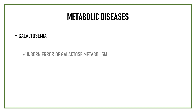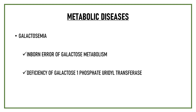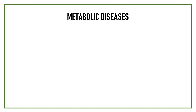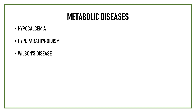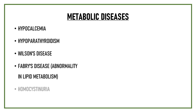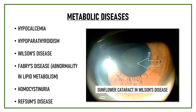Galactosemia is an inborn error of galactose metabolism occurring due to deficiency of the enzyme galactose-1-phosphate uridyl transferase, and it typically produces an oil droplet cataract. Other metabolic diseases associated with cataract include hypocalcemia, hypoparathyroidism, Wilson's disease, Fabry's disease, homocystinuria, and Refsum's disease. Patients with Wilson's disease tend to develop a type of anterior subcapsular cataract known as sunflower cataract.